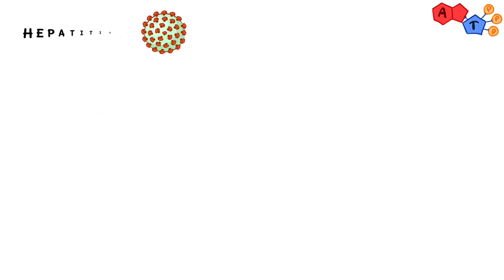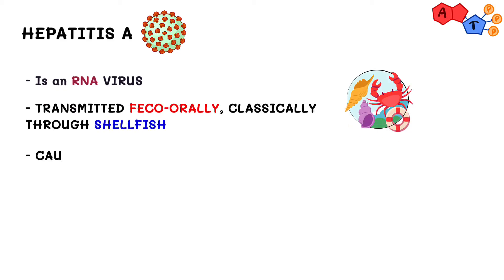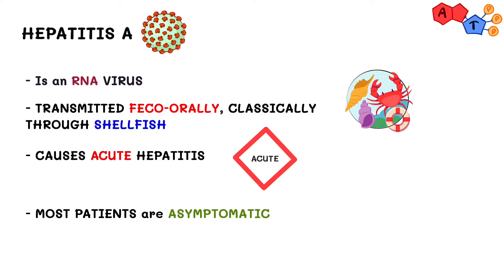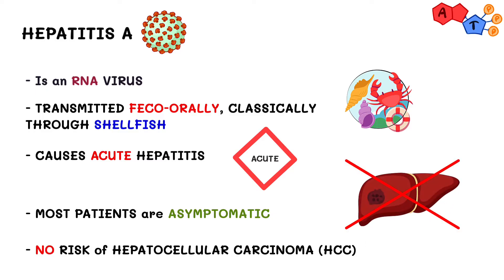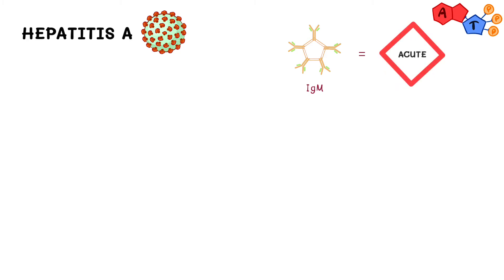Starting with hepatitis A: hepatitis A is an RNA virus transmitted fecal-orally, classically through shellfish. It causes acute hepatitis — A for acute, A for hep A. Most patients are asymptomatic, and since it's acute there is no risk of hepatocellular carcinoma. In terms of serology, it's very basic: if the patient has IgM, this is an acute infection; if they have IgG antibodies, they had an old infection and are now immune.